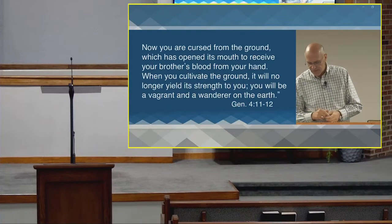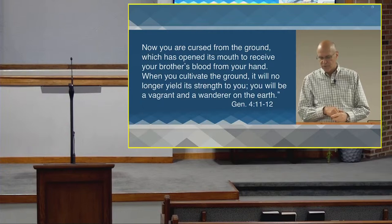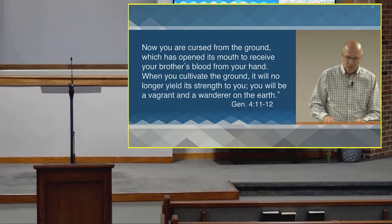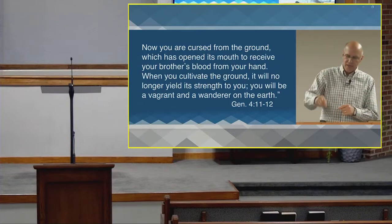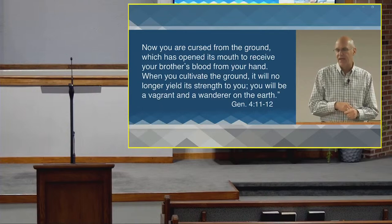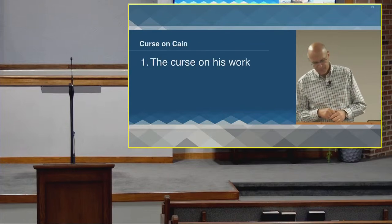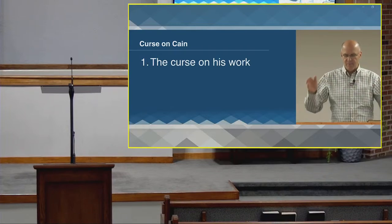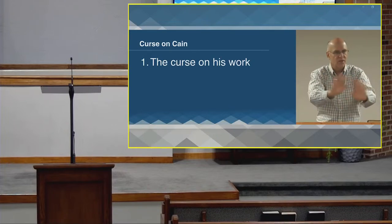We read in verses 11 and 12: 'Now you are cursed from the ground, which has opened its mouth to receive your brother's blood from your hand. When you cultivate the ground, it will no longer yield its strength to you. You will be a vagrant and a wanderer on the earth.' God does not execute punishment immediately, but lists the consequences of this sin in Cain's life. The land, which was already more difficult than it was in the garden, will no longer respond to him because he shed innocent blood.